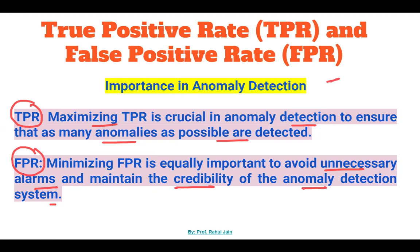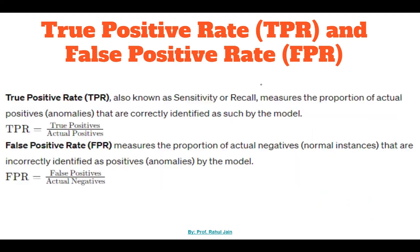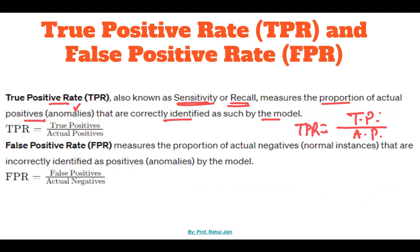True positive is when a model predicts something as positive and it is actually positive. False positive is when the model predicts it as positive but originally it is negative — a false thing predicted as true. True positive rate is also known as sensitivity or recall. It measures the proportion of actual positives or anomalies correctly identified, calculated as true positives divided by actual positives.